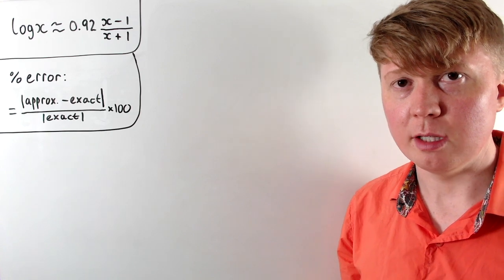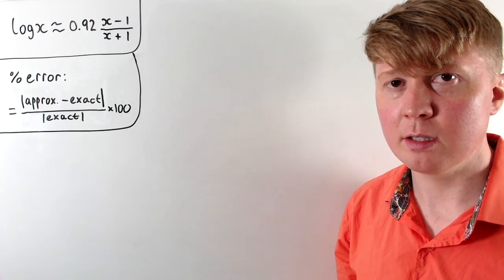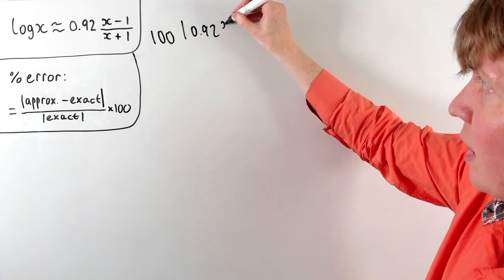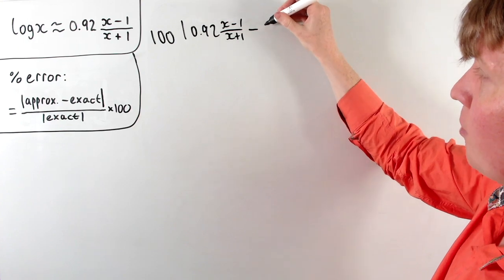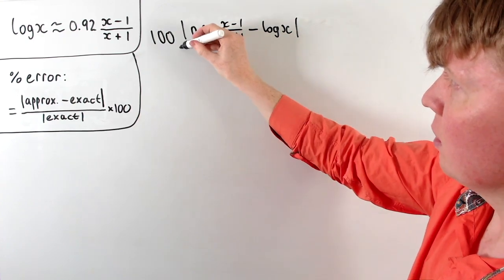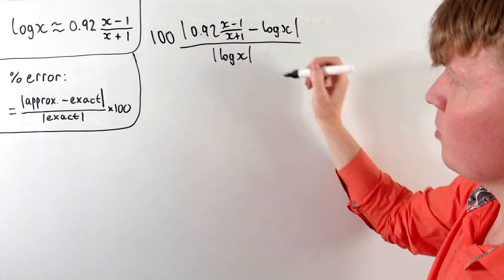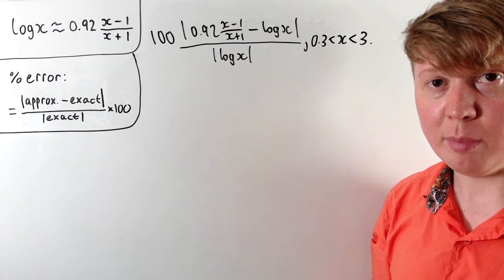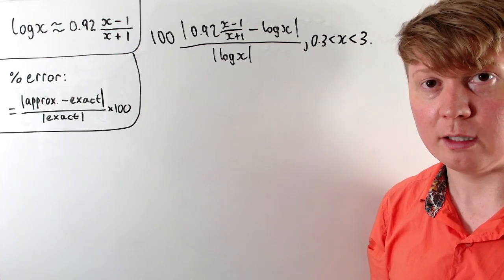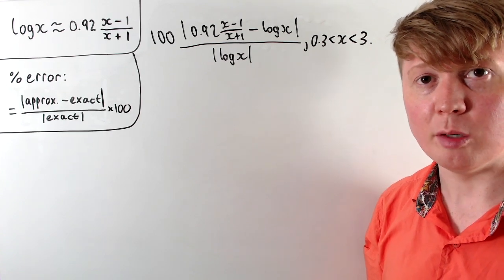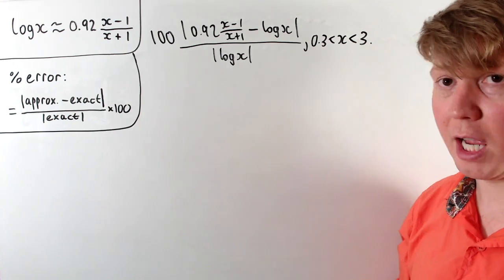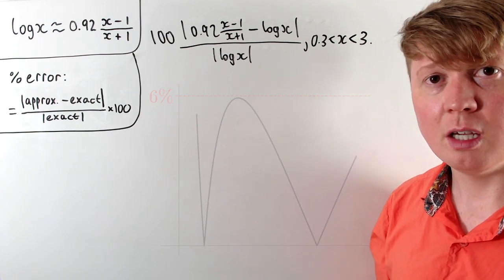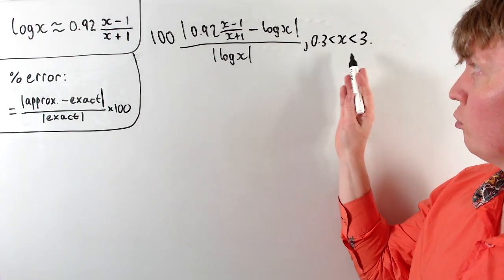Finally, let's address the claim that there is less than 6% error for all values of x. The percentage error function is 100 times the modulus of (0.92 times (x minus 1)/(x plus 1) minus log x), divided by the modulus of log x, and we're initially interested in this for x between 0.3 and 3. While the full calculation using calculus and inequalities is long and inelegant, looking at a graph of this function for x between 0.3 and 3 confirms it stays below 6% throughout that region.